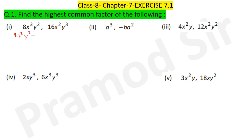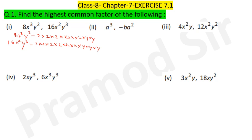When you factorize 8x³y², you will get 2×2×2 and x×x×x (three times) and y×y. And 16x²y³ equals 2×2×2 and x×x (two times) and y×y×y (three times). Then find the highest common factor.